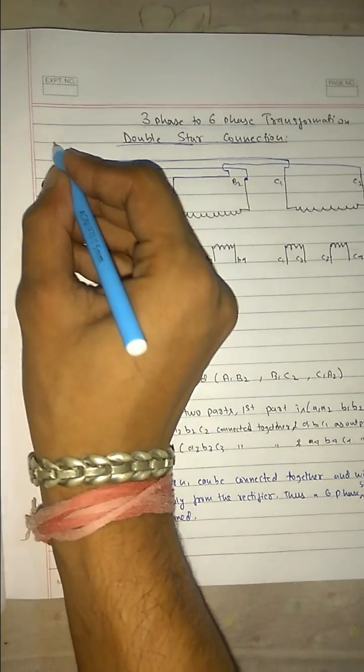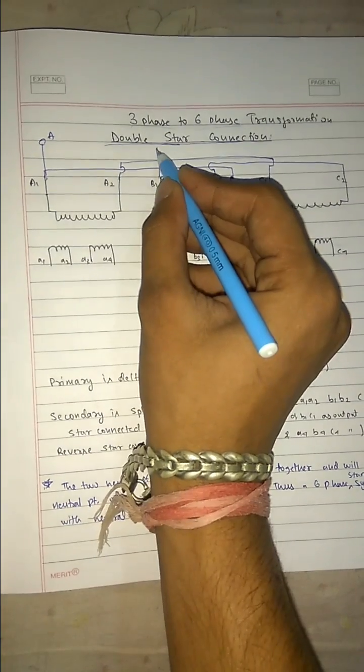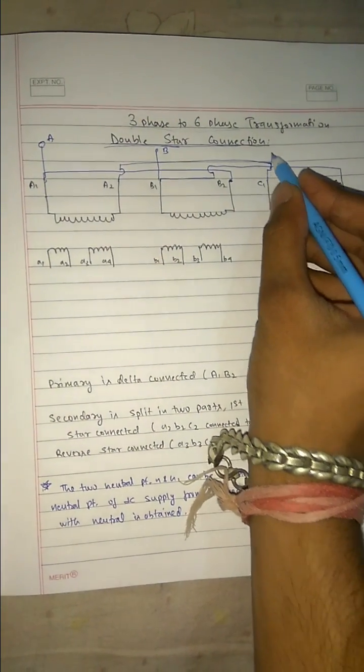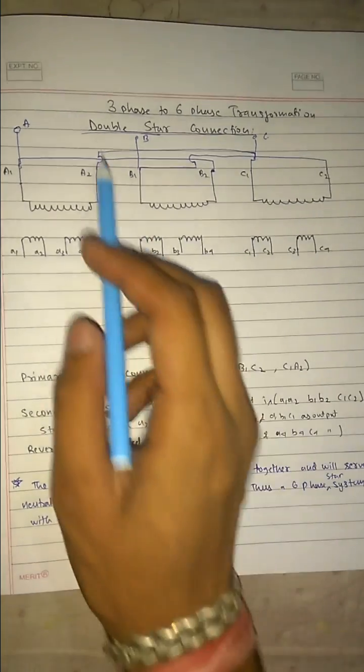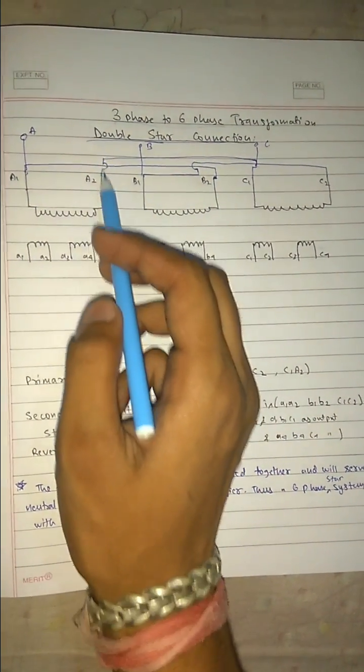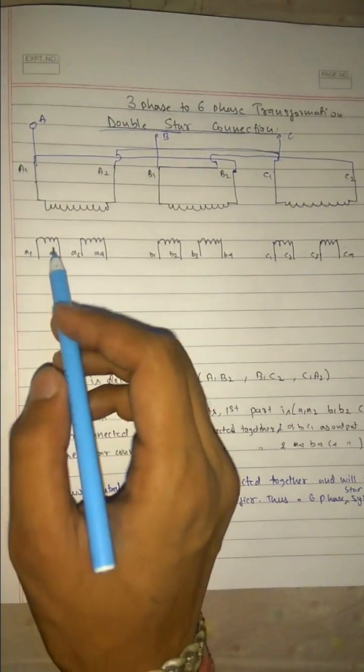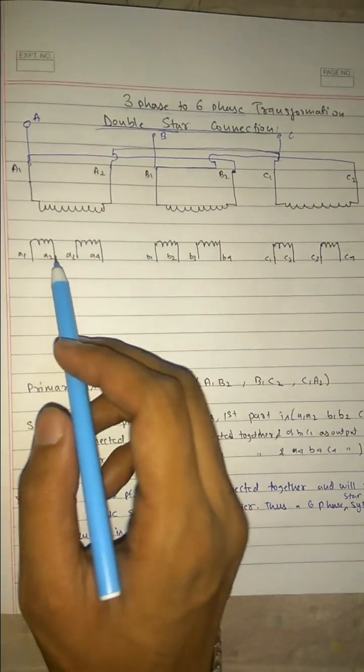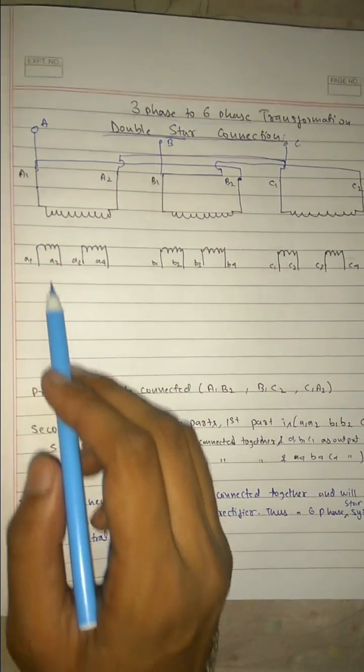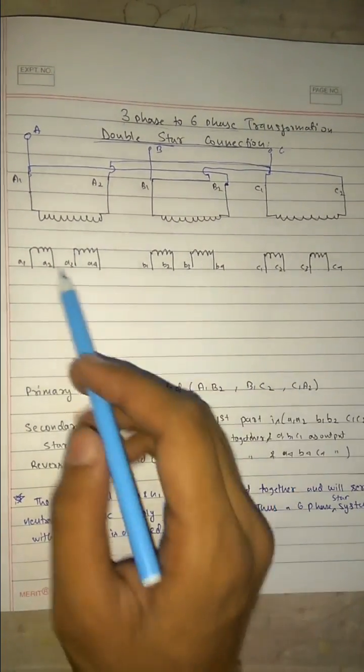And these are our inputs a, b, and c. So our primary is delta connected now: a1-b2, b1-c2, and c1-a2. Now it's time for the secondary. It's split into 2 parts as you can see. Now here again, for easy connections, remember first we take these 3 things: a1-a2, b1-b2, and c1-c2.